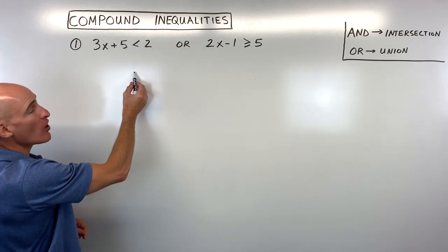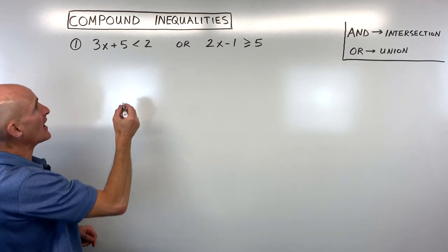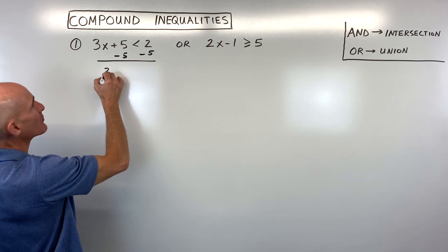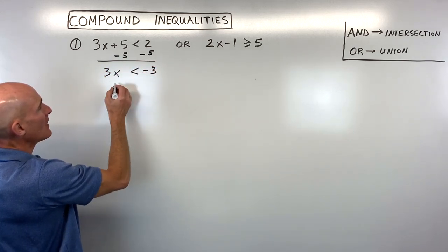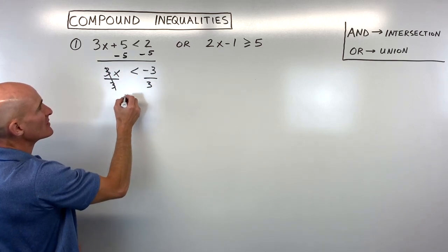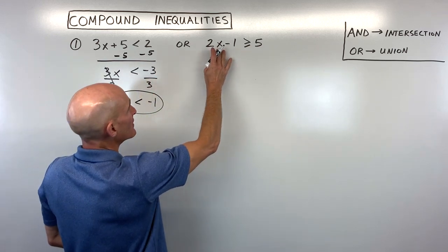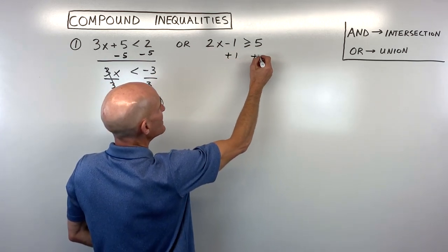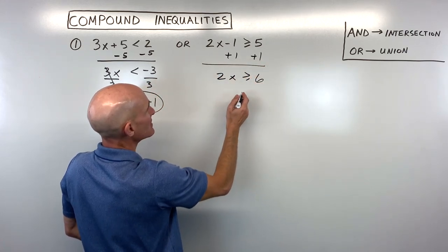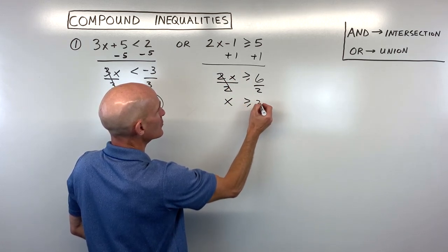Solving these is just like solving an equation — get variables on one side, numbers on the other. We subtract 5 from both sides to get 3x is less than negative 3, then divide both sides by 3, giving us x is less than negative 1. For the second inequality, we add 1 to both sides to get 2x is greater than or equal to 6, then divide by 2, giving x is greater than or equal to 3.